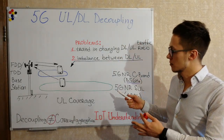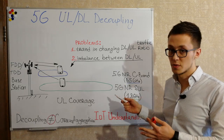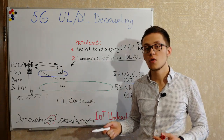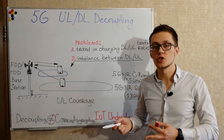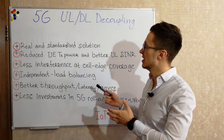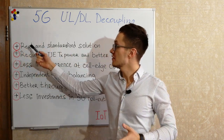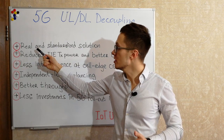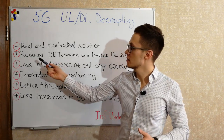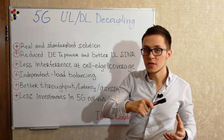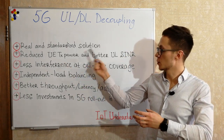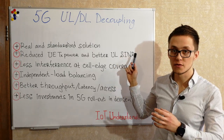This is one example of how these two major problems can be solved. Now let's look at the advantages and disadvantages of this technology. First, 5G uplink/downlink decoupling is a real and standardized design solution — and it's actually a simple one. Second, by using low frequencies for uplink transmission, we can reduce the user equipment transmission power, which improves the uplink signal-to-noise-plus-interference ratio.